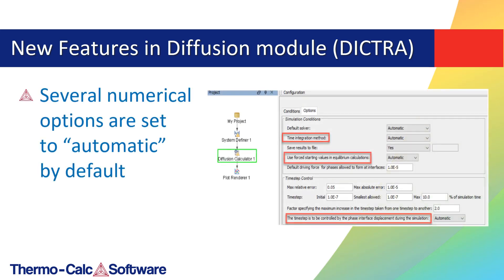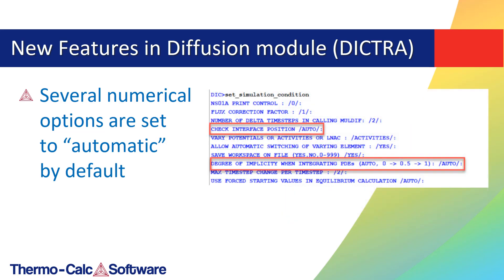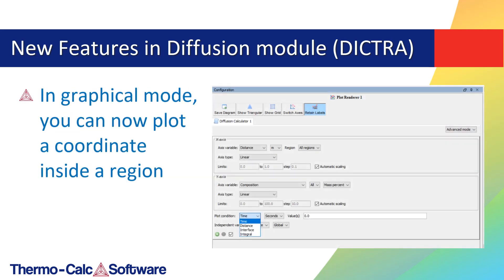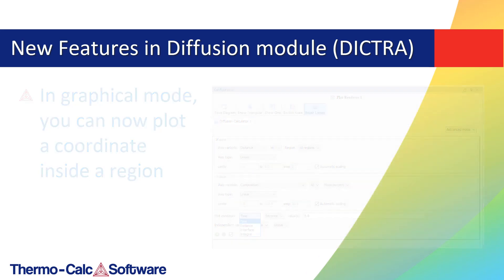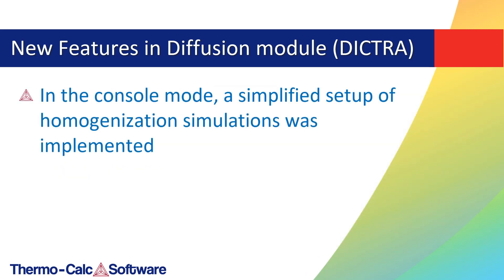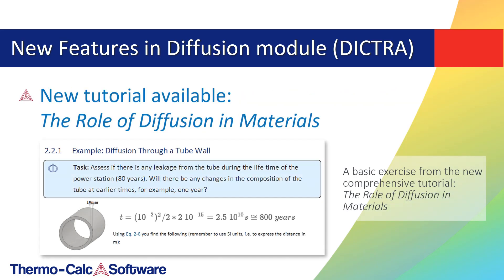The diffusion module DICTRA has received some improvements in Thermo-Calc 2019b. Several numerical options are now set to automatic by default in both graphical and console modes, making it easier to perform common simulations. In graphical mode you can now plot a coordinate inside a region just like you can in console mode, using the distance plot condition available on the plot renderer. In console mode, a simplified setup of homogenization simulations was implemented. There is also a new comprehensive tutorial which teaches about the diffusion module DICTRA and the role of diffusion in materials. Visit dictra.com to download the tutorial or click the link included in the description below.